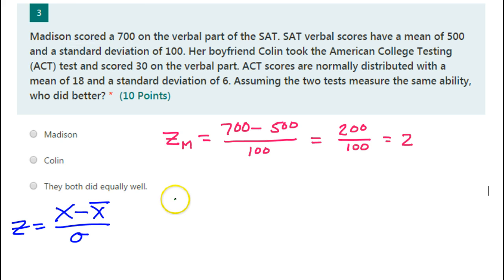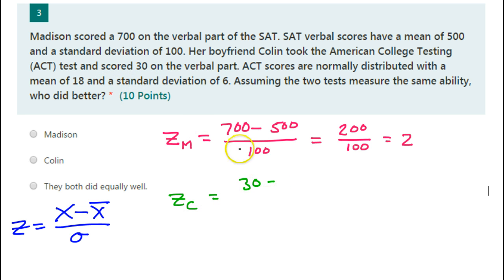Let's do Colin's z-score and see how they compare. Colin got a 30. The mean is 18, standard deviation of 6.